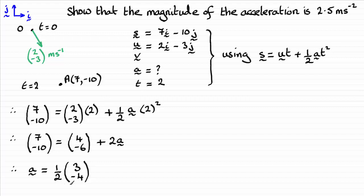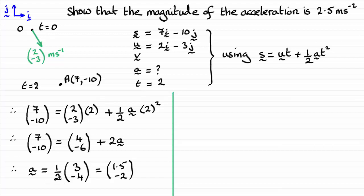You could write the acceleration as 1.5i minus 2j, but I'm going to leave it in the form a half of (3i minus 4j), because we're now going to work out the magnitude of that vector. Leaving it in this form is easier because I can keep the constant a half outside. Using Pythagoras' theorem, the magnitude is a half times the square root of the sum of the squares of the two components. This is a familiar 3-4-5 triangle, so already I know the magnitude of this vector is 5.